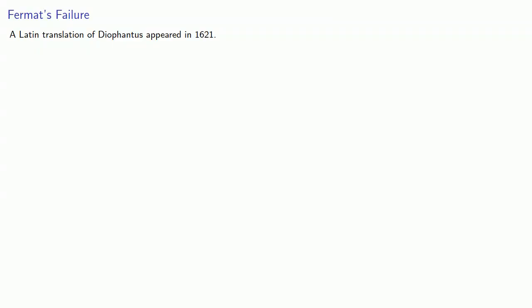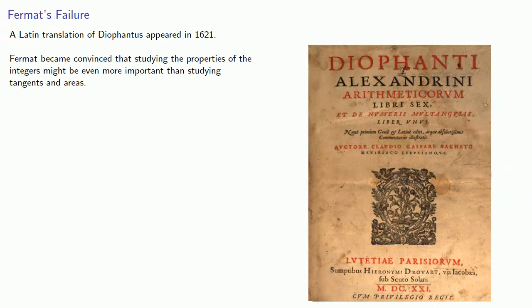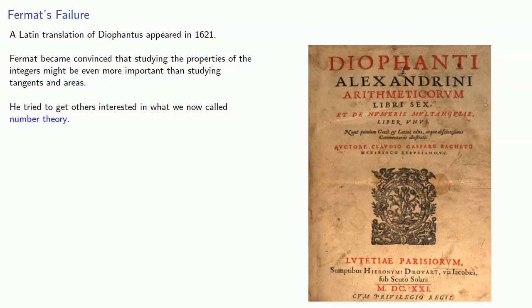A Latin translation of Diophantus appeared in 1621. Fermat became convinced that studying the properties of the integers might be even more important than studying tangents and areas. He tried to get others interested in what we now call number theory.